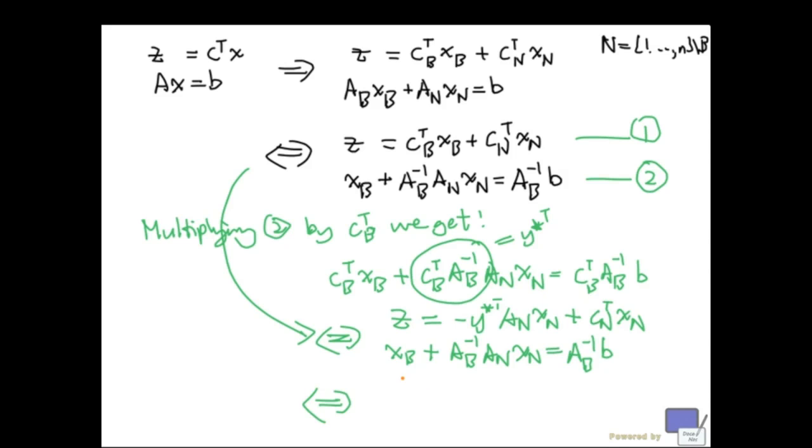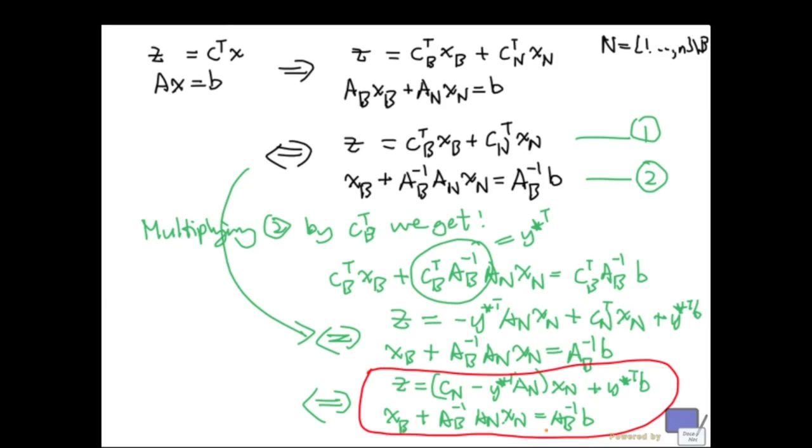And finally, simplifying this, I get... So I'm missing something here. I'm missing a Y transpose B here. And this is also plus Y star transpose B. So, I want you to stare at this for a moment. Clearly, if I plug in X star here, Z will be equal to Y star transpose B. And that is the current objective function value.